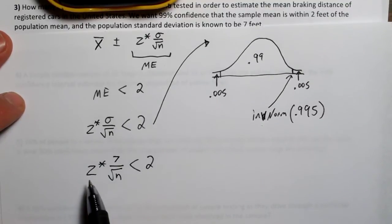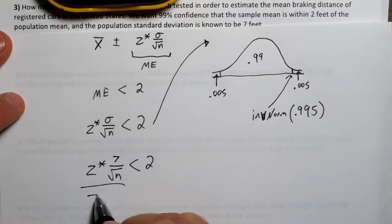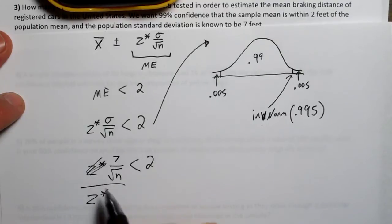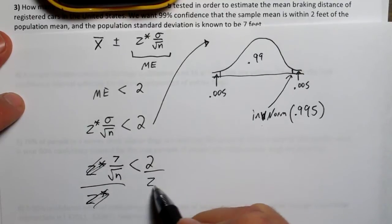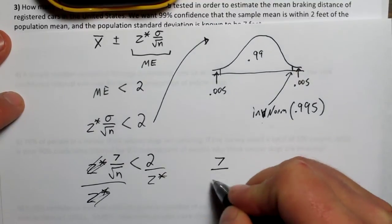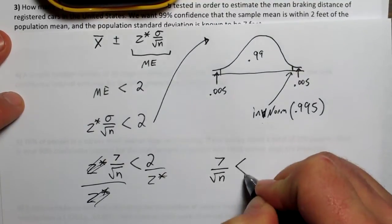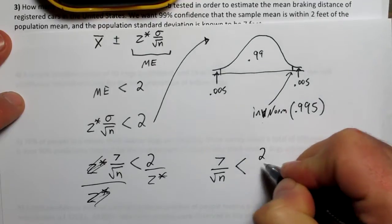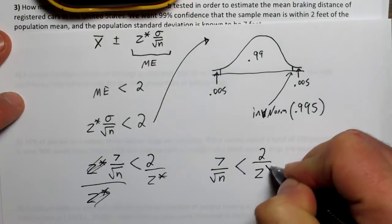Z star times 7 over the square root of n needs to be less than 2. Let's go ahead and start by dividing both sides by z star. That will cancel this one off that side, and on this side we have 2 over z star. So we have 7 over the square root of n needs to be less than 2 over z star.